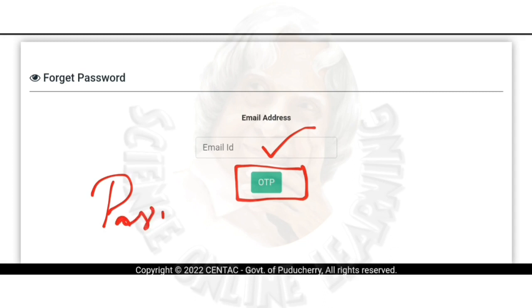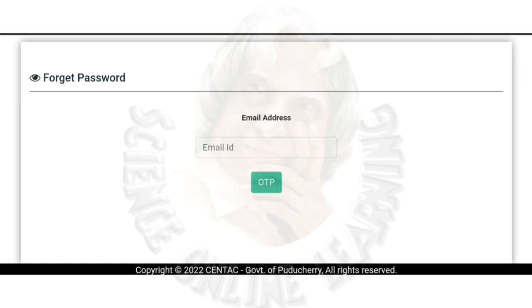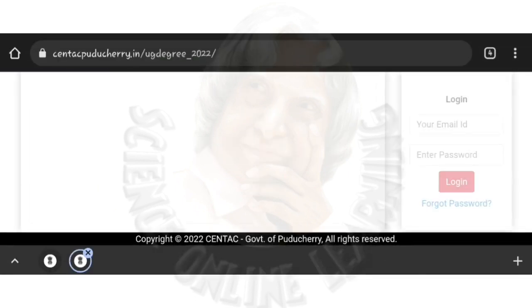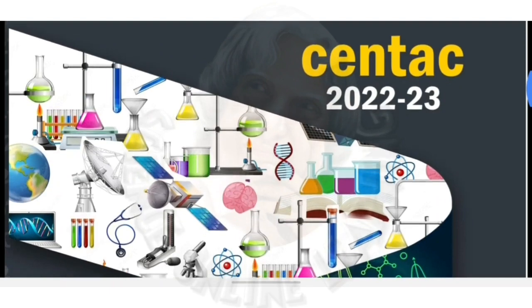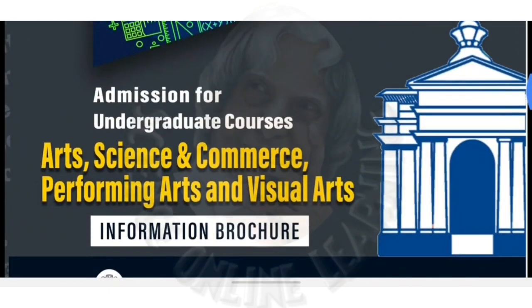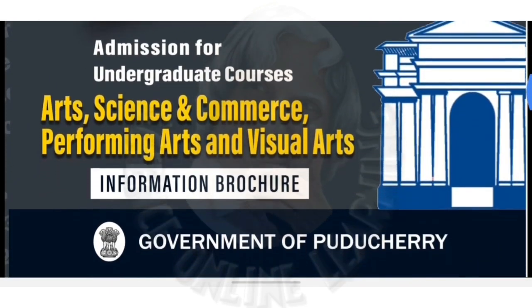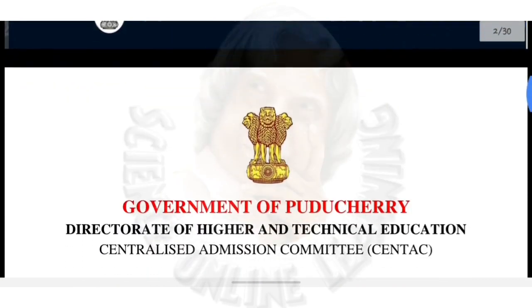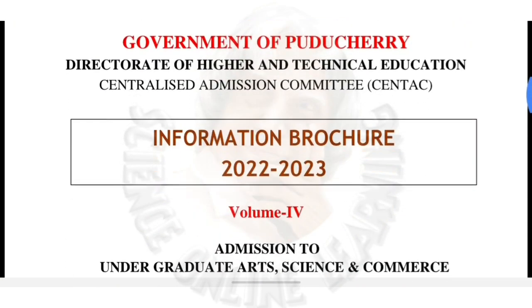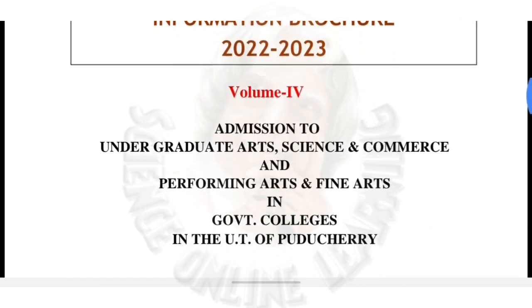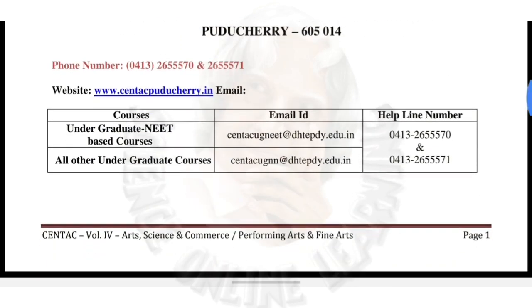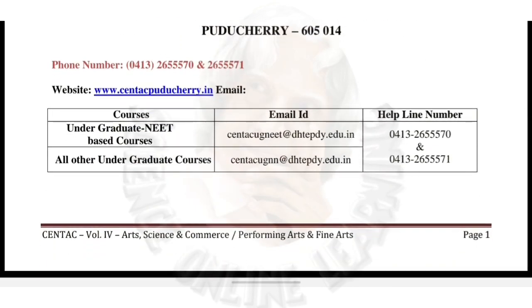Learn what your first date will be done. Now you can see the information brochure on the first day. There are details about visual arts, colleges, facilities, etc. If you have a helpline number, you can get a mail ID. If you apply for any course, you can get a mail ID and get a response.